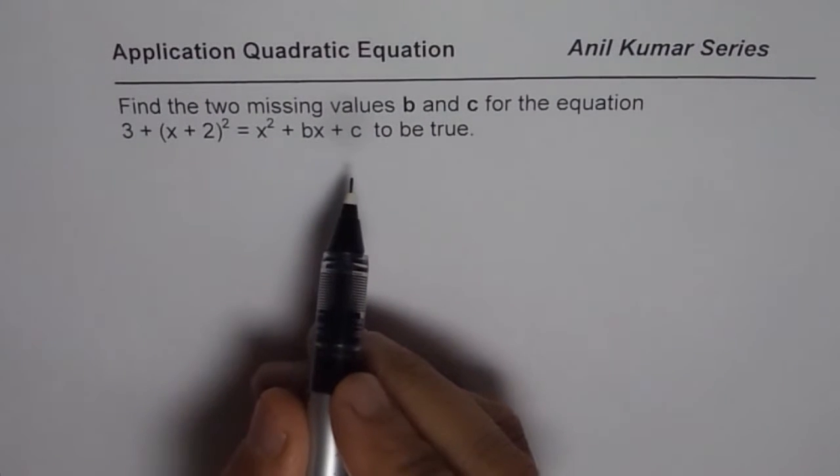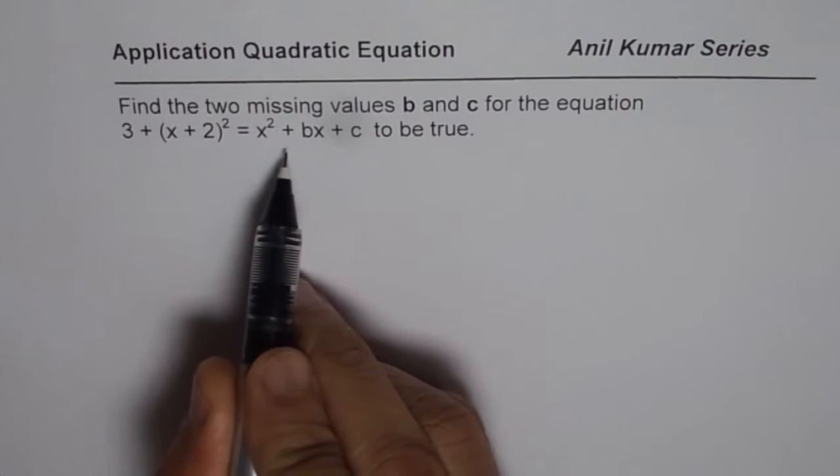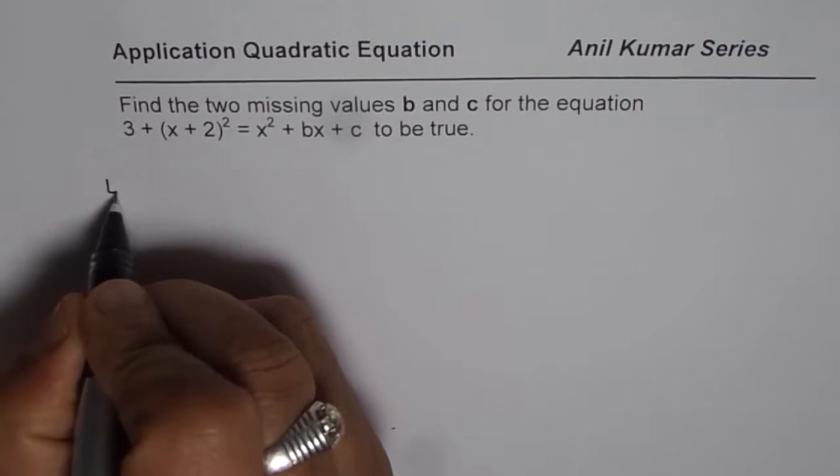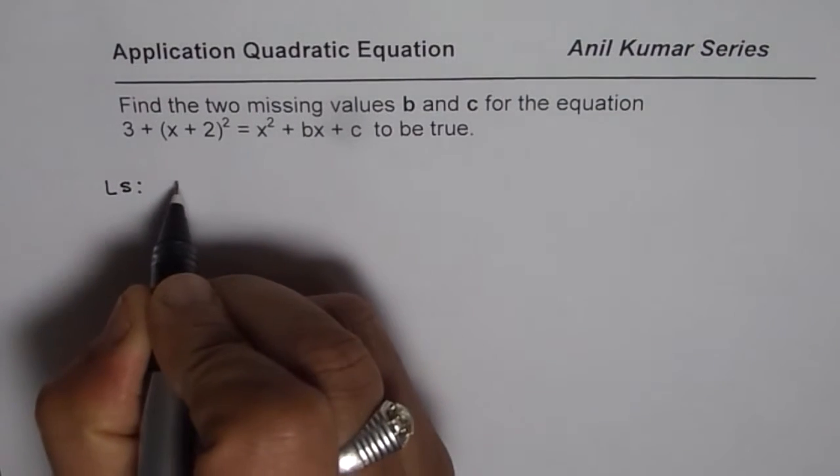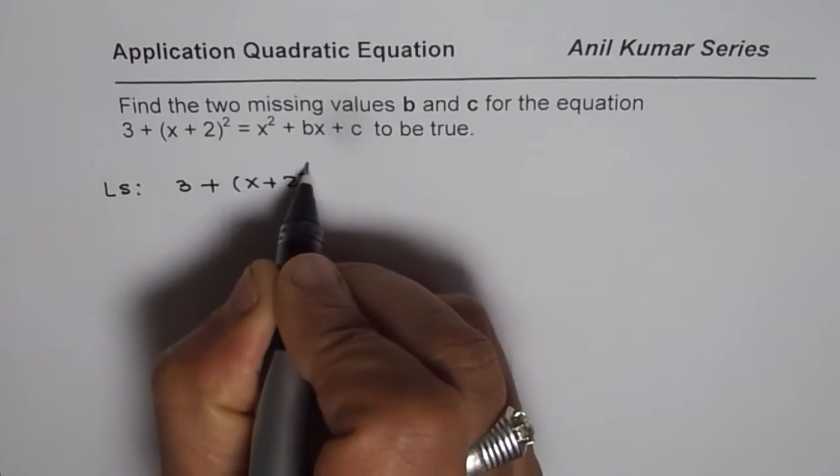Now in such equations we can expand the left hand side and then equate the two equations to find the unknown values. So let's begin from the left side which is given to us as 3 plus x plus 2 whole square.